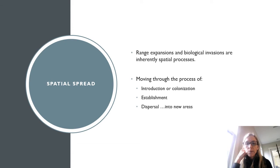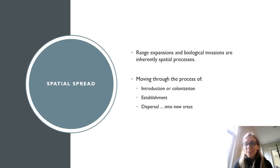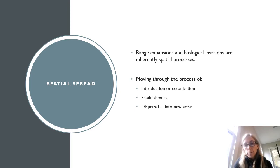Range expansions and invasions are inherently spatial processes, and a lot of the ways we analyze those are the same spatial tools we've already used and talked about. We'll talk through the different stages of spatial spread of organisms, which includes introduction and colonization, establishment, and then dispersal to new areas. When we think about spatial spread, it really is the interaction between dispersal of organisms and demographics of those populations within the landscape structure.